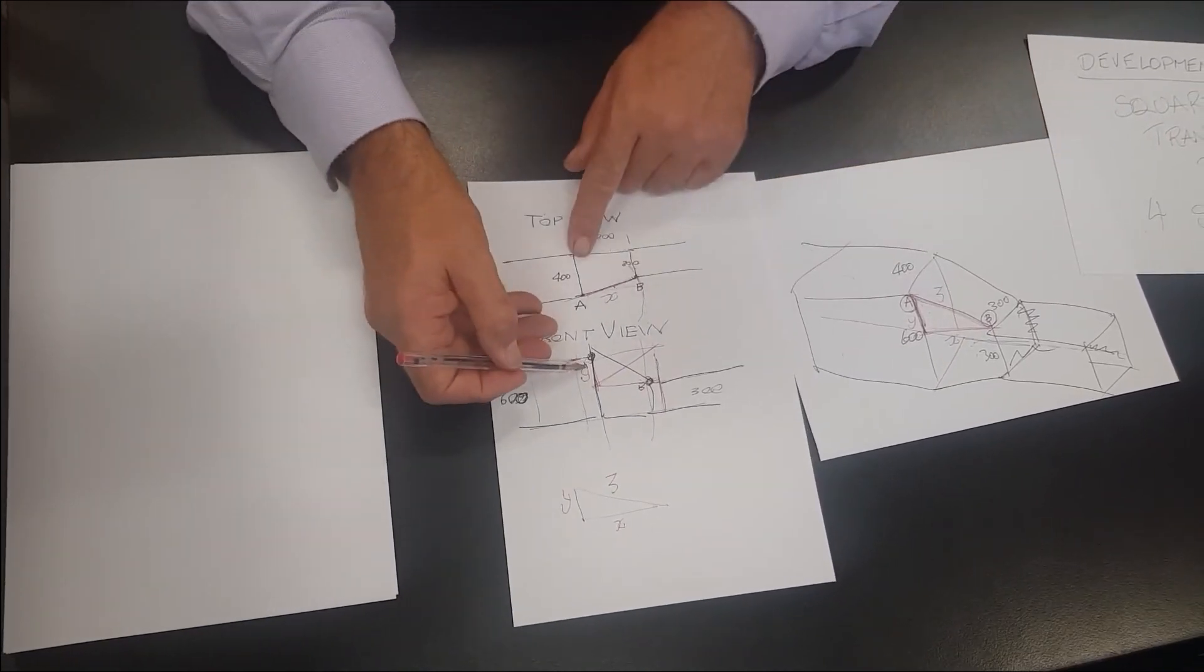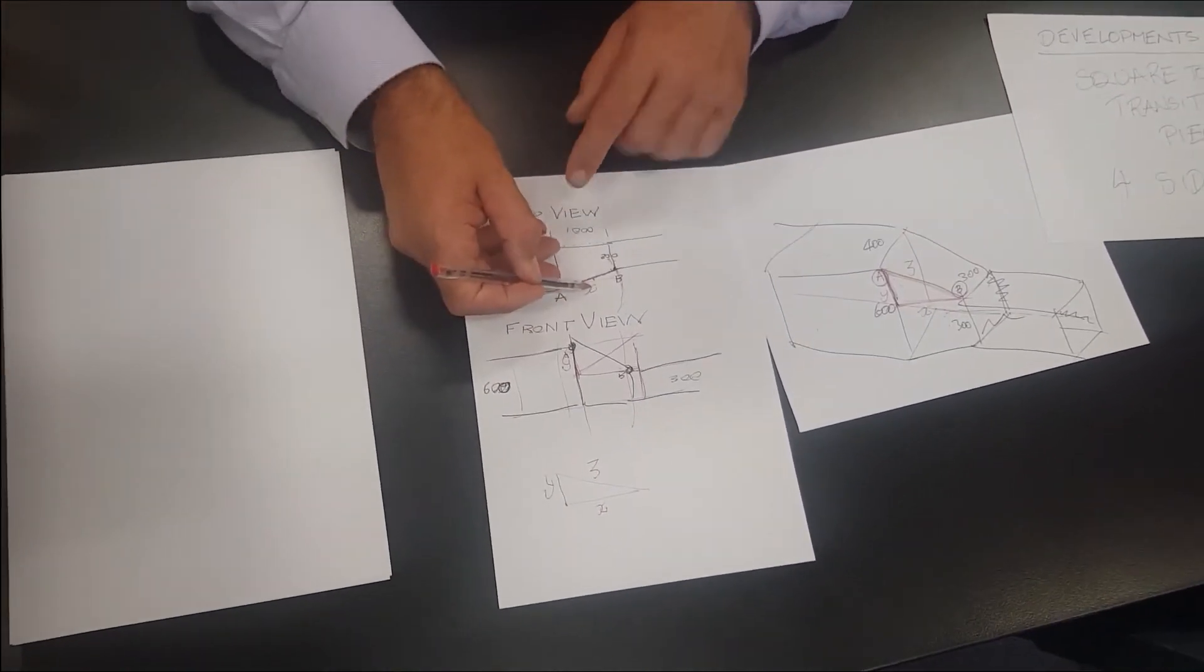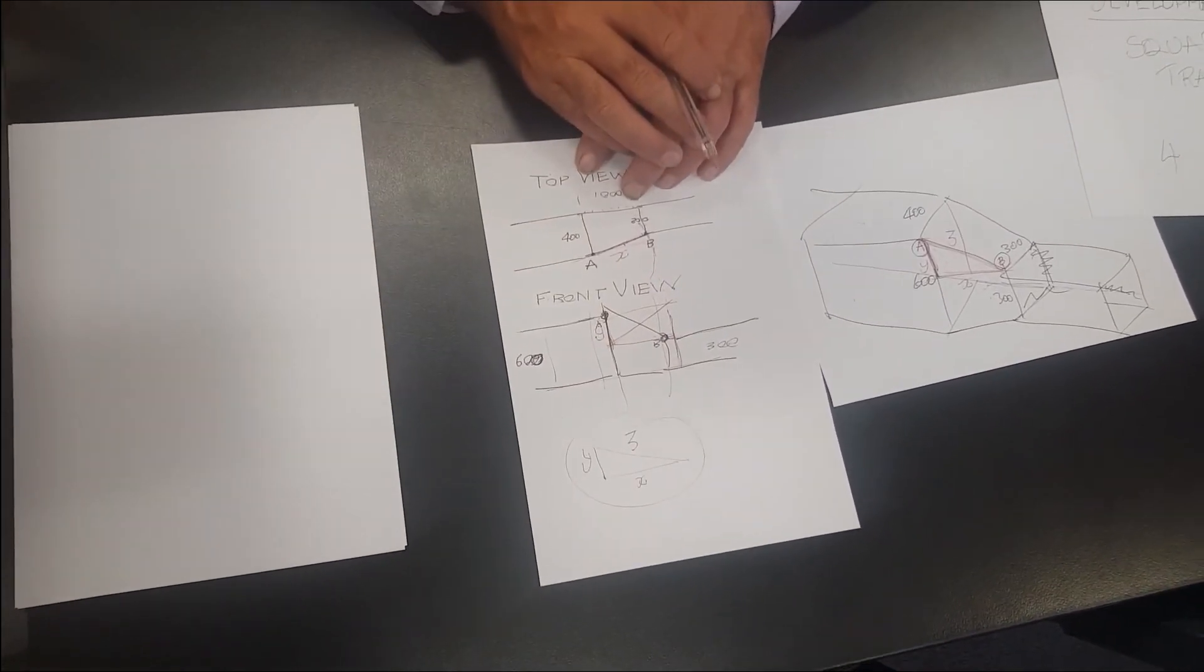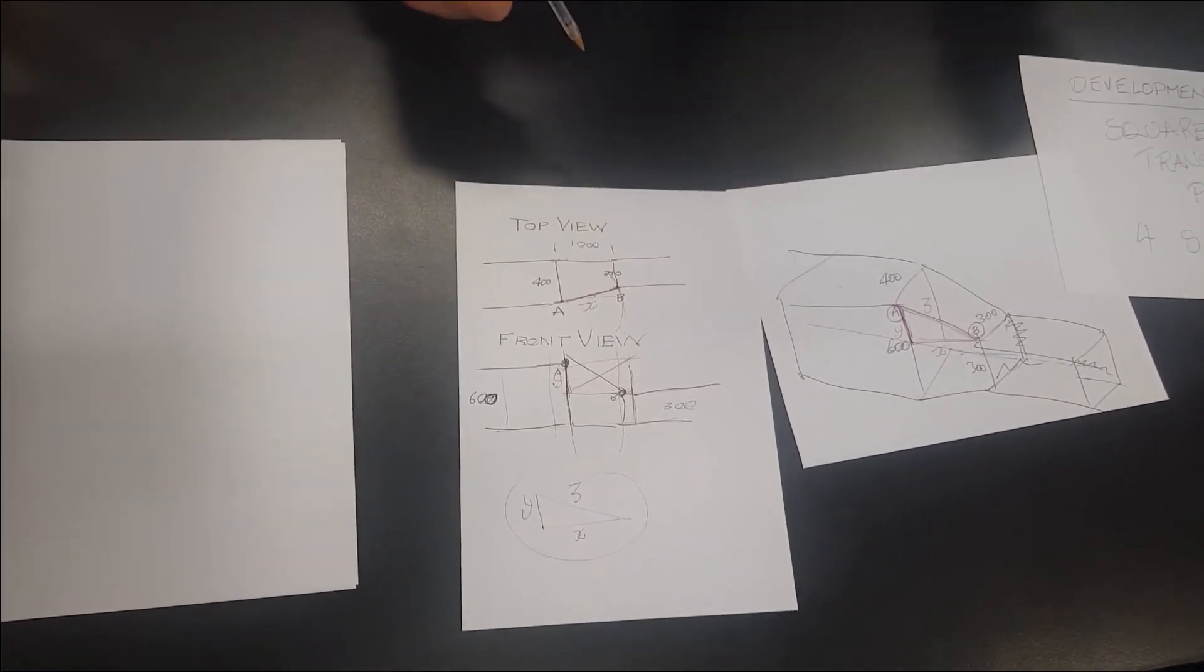Make sense? You've got Y, measure it. You've got X, measure it, then you just draw out the rectangle. Ah, the triangle. Sweet. Sweaters?